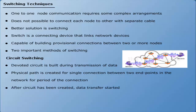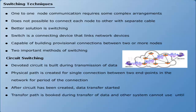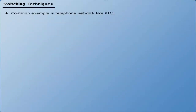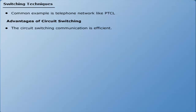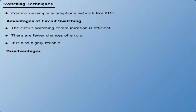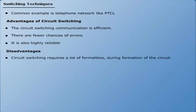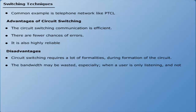After the circuit has been established, data transfer takes place. The transmission path is reserved during transfer and other systems cannot use it until the transfer is completed and the circuit is released. The most common example of a circuit switch network is the public telephone network like PTCL. Advantages of circuit switching: the communication is efficient, there are fewer chances of errors, and it is highly reliable. Disadvantages: it requires many formalities during circuit formation, bandwidth may be wasted especially when a user is only listening, and the setup of the channel may take a longer time.